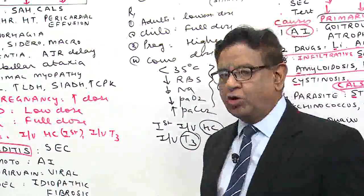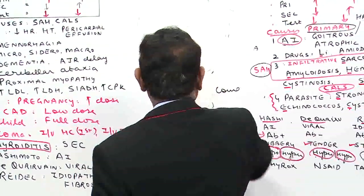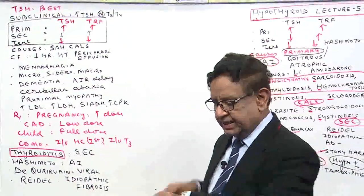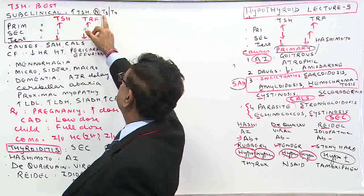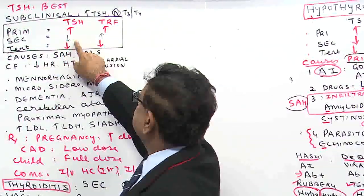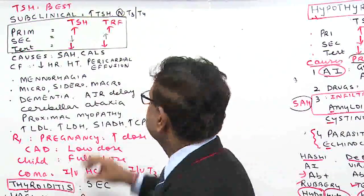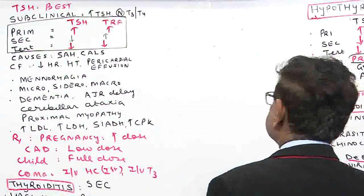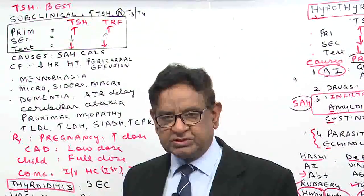Let us revise the summary of hypothyroid. TSH is the best test. In subclinical hypothyroid: increased TSH, normal T3, normal T4. In secondary: TSH reduced, TRH increased. In tertiary: both TSH and TRH are reduced. Causes — mnemonic SAH for sarcoidosis, amyloidosis, hemochromatosis; and CALS for cystinosis, amiodarone, lithium, scleroderma.